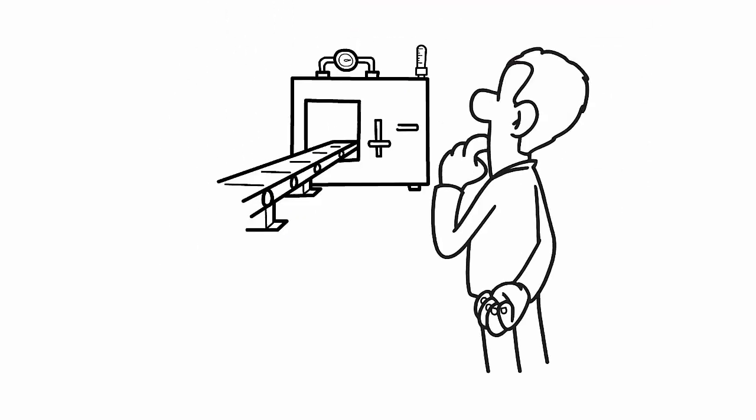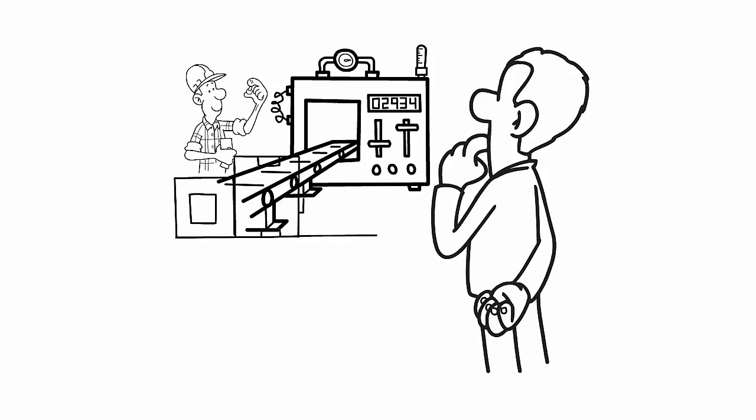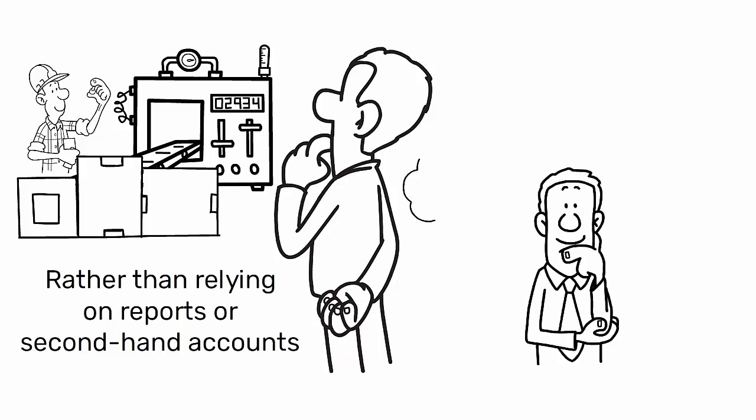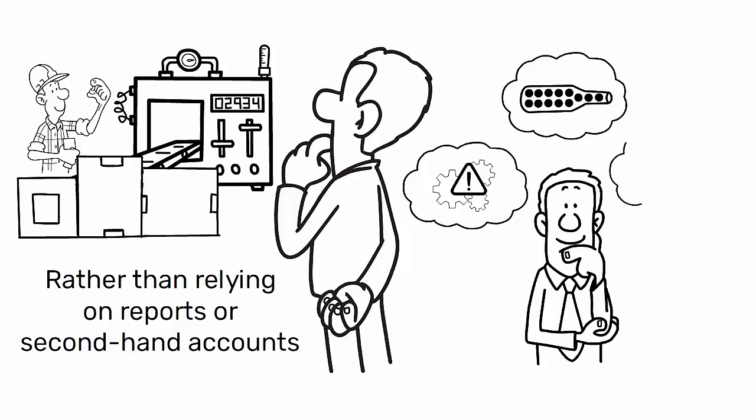It allows engineers to see firsthand how work is done rather than relying on reports or secondhand accounts. This direct observation helps to identify inefficiencies, bottlenecks, and waste that might not be apparent from a distance.